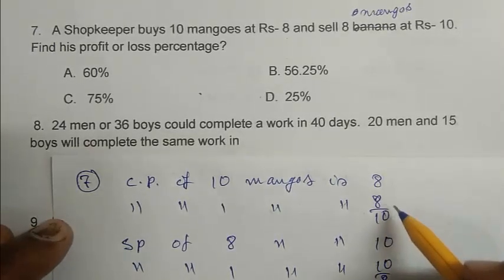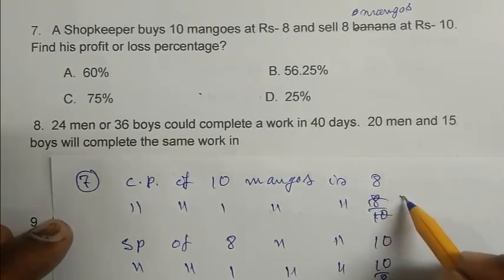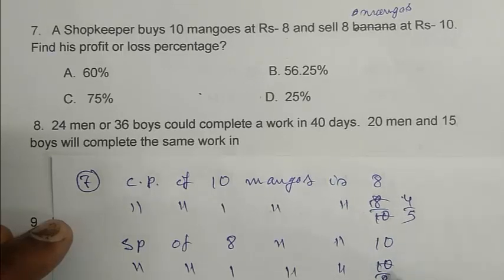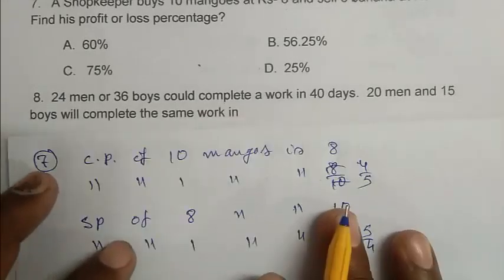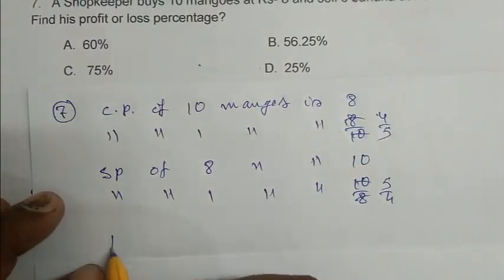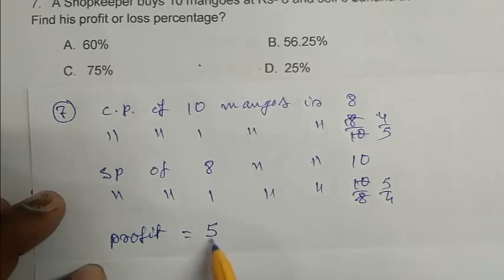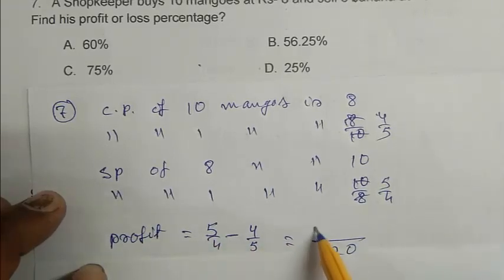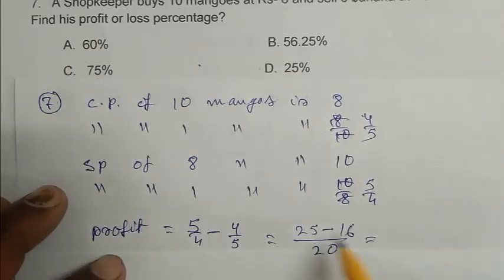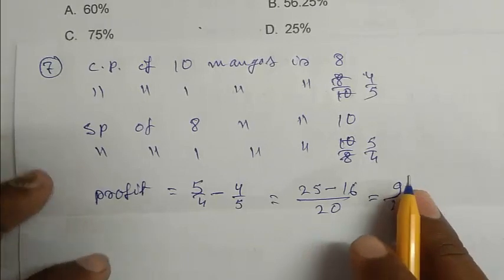So it is become 4 by 5. It is become 5 by 4. So profit is 5 by 4 minus 4 by 5. That is 20, 25 minus 16, that is 9 by 20. So profit is 9 by 20.